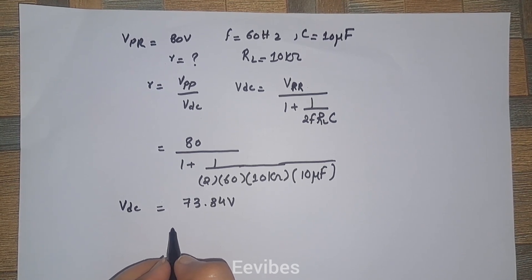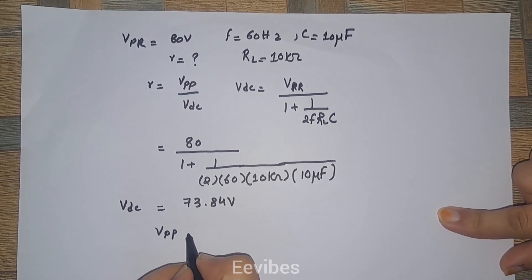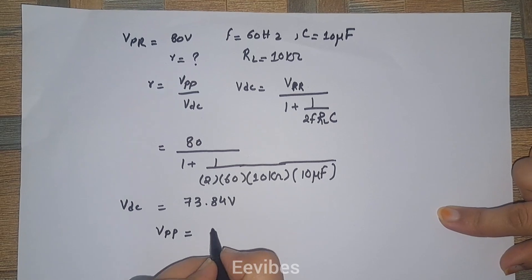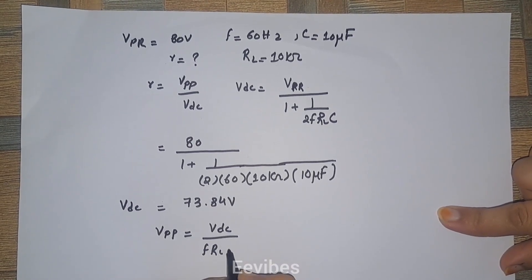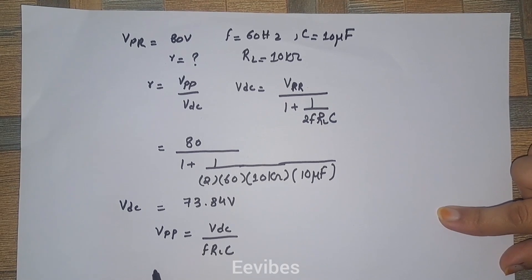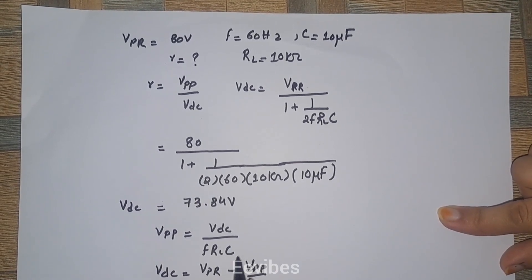V peak to peak is equal to V DC divided by FRLC, or V DC is equal to V peak rectified minus V peak to peak over 2, in order to determine the value of V peak to peak.